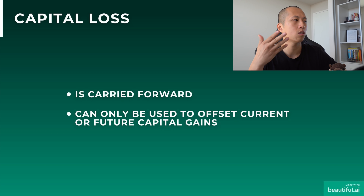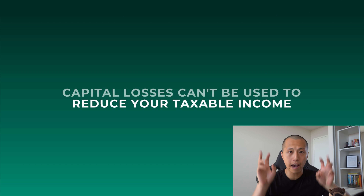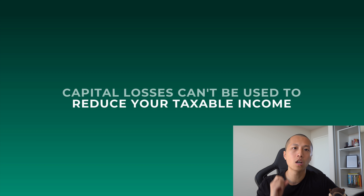What if Otto made a loss? If Otto sold his shares and lost $10,000, that amount is carried forward and can only be used to offset current or future capital gains. For example, if Otto made another $10,000 gain in the future, that gain is offset by the previous loss, meaning he won't have to pay any capital gains tax that financial year. Capital losses are carried forward and cannot be used to reduce your general taxable income — only to offset future capital gains.